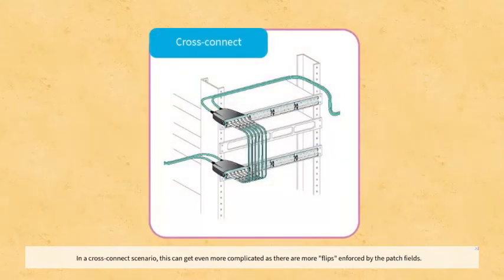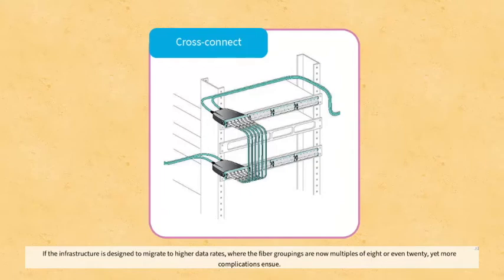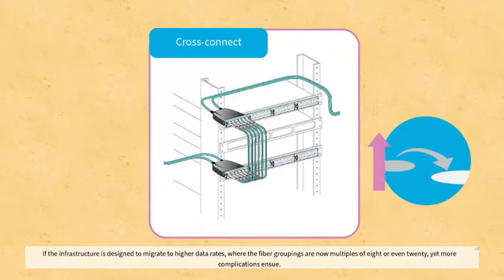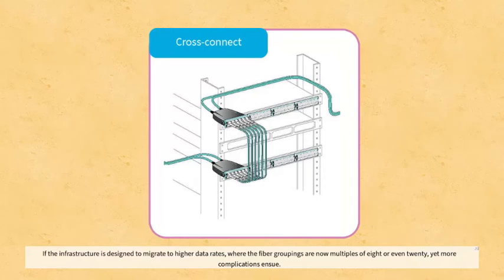In a cross-connect scenario, this can get even more complicated as there are more flips enforced by the patch fields. If the infrastructure is designed to migrate to higher data rates where the fiber groupings are now multiples of 8 or even 20, yet more complications ensue.